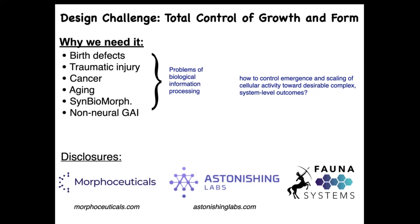All of these things boil down to one problem: how do we communicate our morphological goals to a group of cells? I have to make disclosures because I'm involved in three different spinoffs from my lab — Morphosuticals, Astonishing Labs, and Fauna Systems — which I'm happy to talk about afterwards.